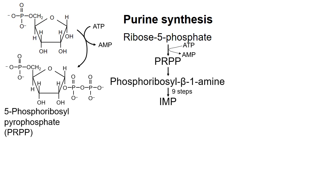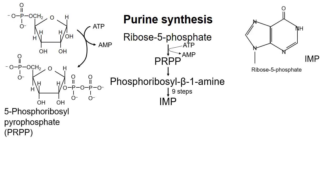For example, the first step is to add a nitrogen atom to the 1-prime carbon to make phosphoribosyl beta-1-amine. After a series of nine more steps, the base hypoxanthine has been built on the sugar, giving rise to the nucleotide inosine monophosphate, or IMP. The structure of IMP is shown. The colored circles indicate where the atoms of the rings come from — there's no need to memorize that, I just want to show you that the molecule is assembled from a bunch of different pieces.